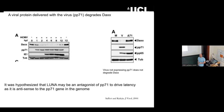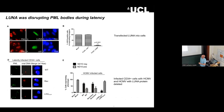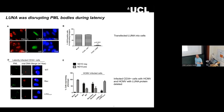We took the LUNA protein and expressed it by itself in a cell. What we saw was that the red dots — the PML bodies — were lost in cells where LUNA protein was expressed. In virally infected cells, there were far fewer PML bodies. In a cell where we can see the viral genome in red, there are no PML bodies. When we removed LUNA from the virus using a deletion mutant, we now see the PML bodies co-localising with the viral DNA. So this was all suggesting that LUNA, this viral protein, was targeting PML bodies during latency.